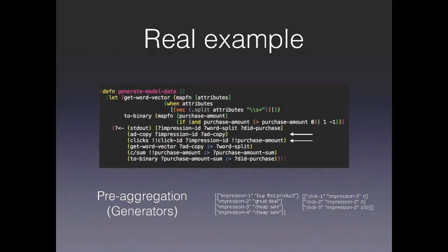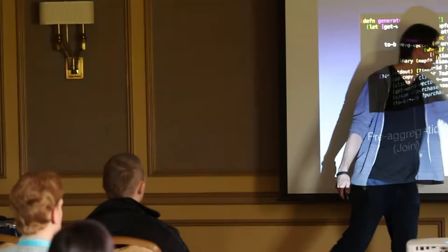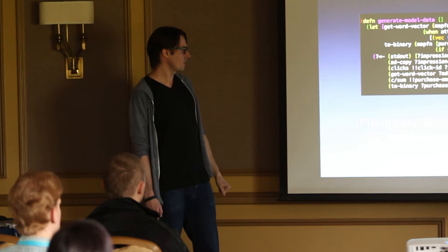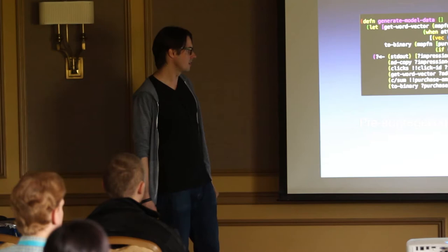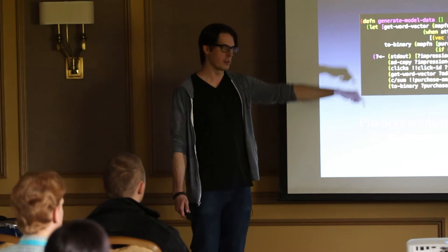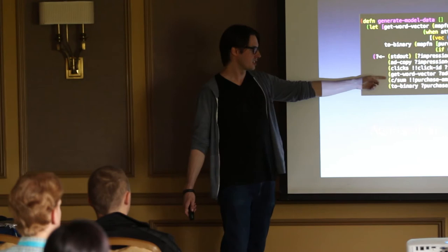The next thing that Cascalog is going to do is join these together. Just because this impression ID and this impression ID are the same thing. It figures out that impression one uses this ad copy and joins it with the click. This impression joins the click two. This impression joins the click three. This impression joins the click one. And ultimately puts out the purchase amount at the end. This is another aggregation upwards where we're doing a word split. We're just splitting out the name by this product into a vector or great deal into a vector.